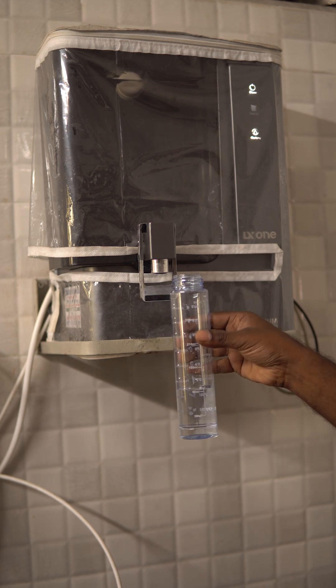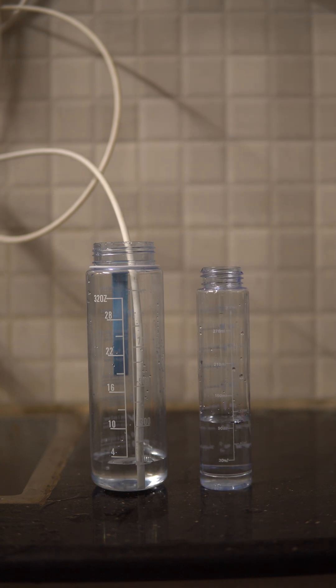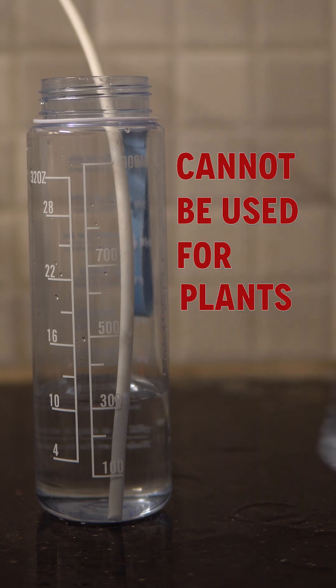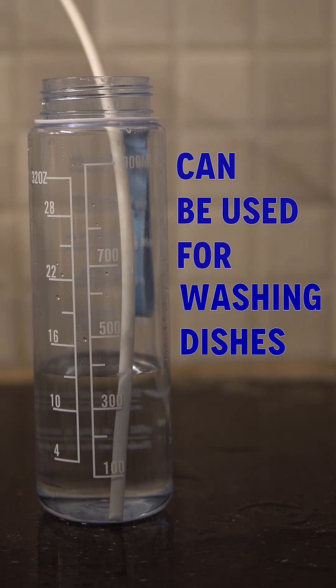For every 100 milliliters of purified water from your RO system, more than 300 milliliters goes straight down the drain. That's precious water you cannot use for plants, clothing, bathing, or cooking, but it can be recycled for washing dishes.